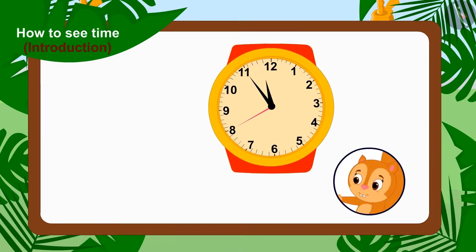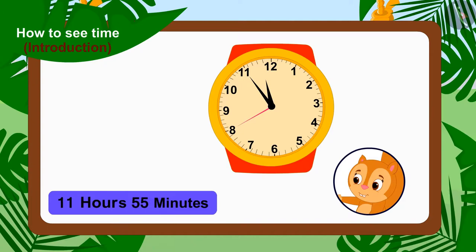Now, this is very easy. Whenever we want to tell the time in the watch, just call the hour and minute numbers together. In this way, it is 11 hours and 55 minutes in Chanda's watch.